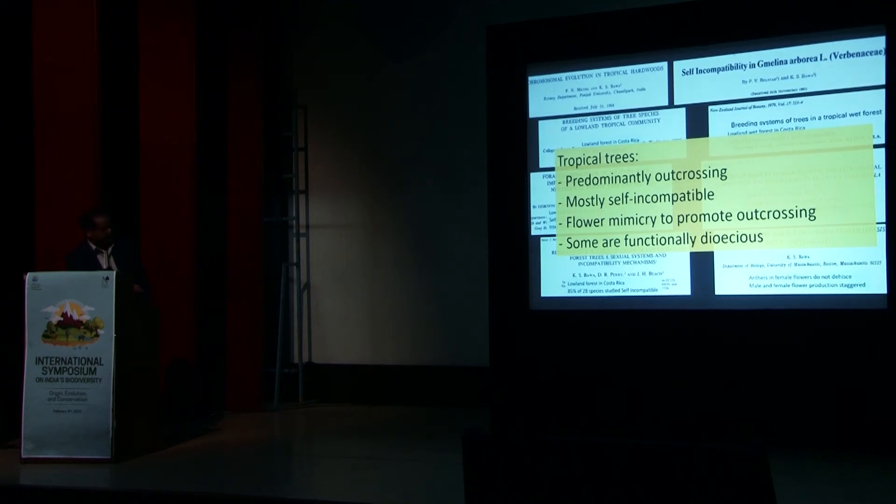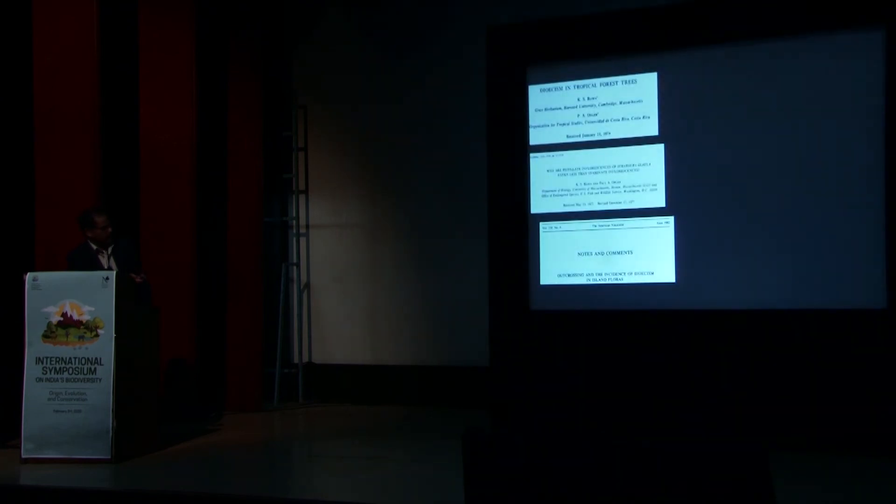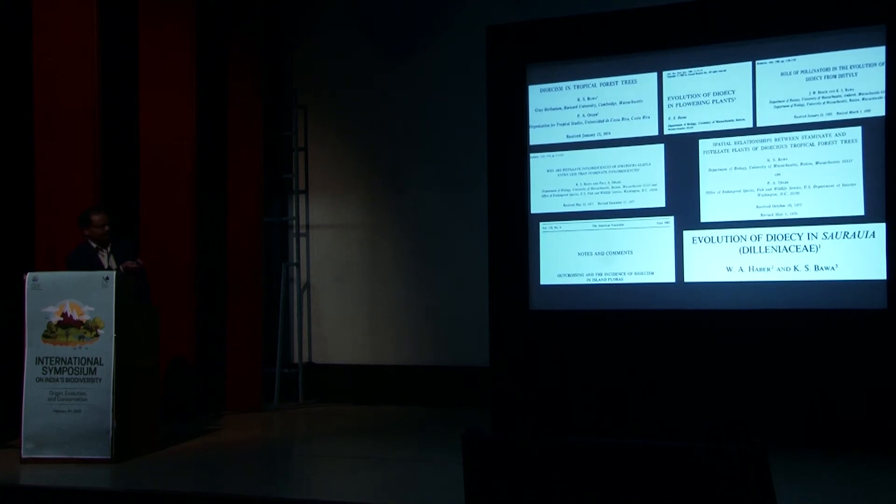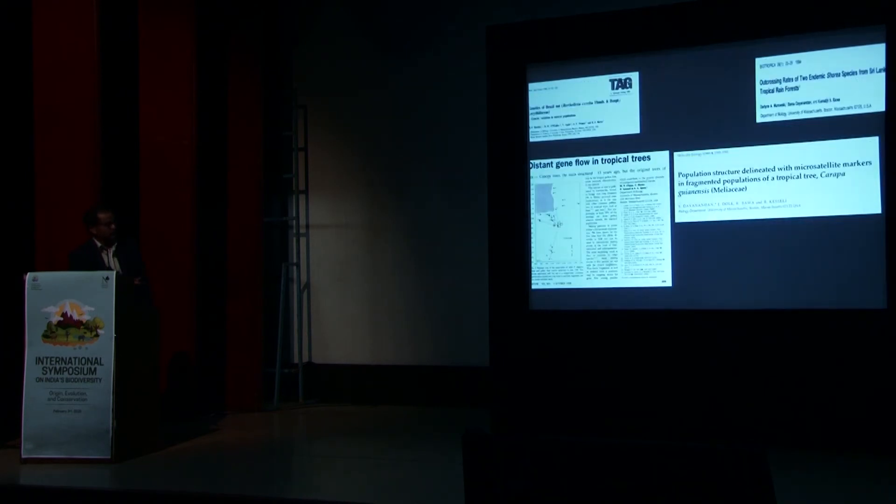So essentially, in tropical trees, they are predominantly outcrossing, mostly self-incompatible, and the flower mimicry to promote outcrossing, and some are functionally dioecious. In this particular case, they are functionally dioecious, because even though they have both flowers on the same tree, their phenology is different, because one day it's male, and the other day it's female. And then, second set of experiments, again, it showed dioecious in many cases, and some of them actually in collaboration with Moshankar and Ganesha as well. So some tropical trees are dioecious. That means there is no selfing at all, because they have to be outcrossing, because these male and female trees are different.